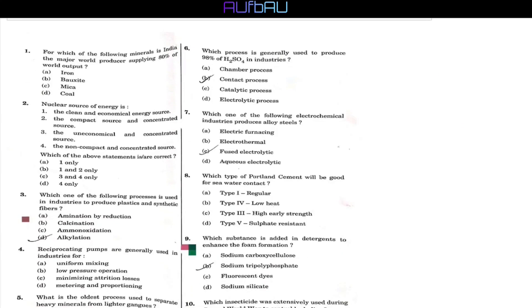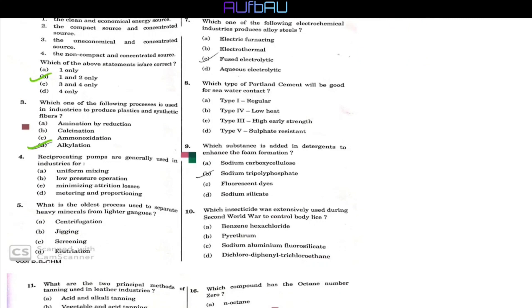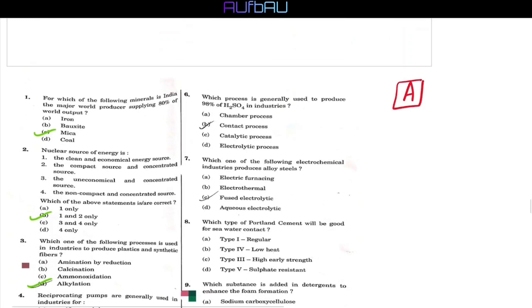So at first, let's discuss the probable answer keys of that question paper. This is for question booklet number A. And please don't fall for this tick marks. These tick marks were already there when I found it in the internet. So the first question is, for which of the following minerals is India the major world producer supplying 80% of world output. The answer will be mica. The next question is about nuclear source of energy. It will be both 1 and 2, Option B. The third question is, the answer will be alkylation. For question number 4, reciprocating pumps are generally used in industries for metering and proportioning. Next, the oldest process used to separate heavy minerals from lighter gangs are jigging.